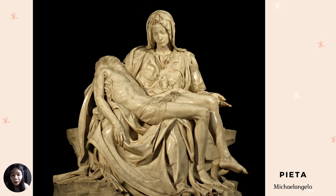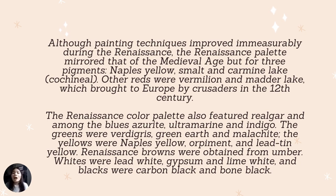Examples of renaissance sculptures include Michelangelo's Pietà. Although painting techniques improved immeasurably during the renaissance, the renaissance palette mirrored that of the medieval age but added pigments such as Naples yellow, smalt, and carmine lake. Other reds were vermilion and madder lake, brought to Europe by crusaders in the 12th century.